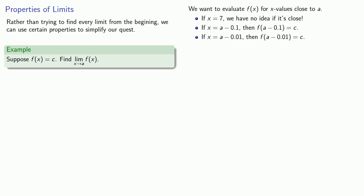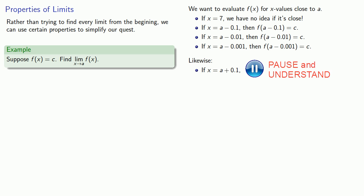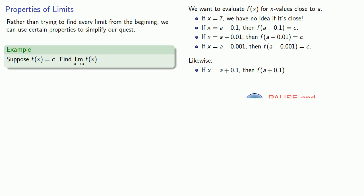If I take another value close to a, how about a minus 0.001, then f applied to a minus 0.001 is still c. Now let's take a couple of x values that are larger than a. A close value is a plus a little bit. So if x equals a plus 0.1, then f of a plus 0.1 is c. If x is a plus 0.01, the function value is c. And if x is a plus 0.001, the function value is c once again.